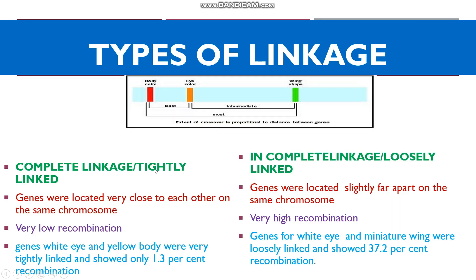There are two types of linkage: complete linkage (tightly linked) and incomplete linkage (loosely linked). On the chromosome, the gene for eye color and body color are located close together, whereas the gene for eye color and wing shape are located far apart. The recombinant frequency is 1.3% for the former and 37.2% for the latter — the greater the recombinant frequency, the more distant the linked genes are.